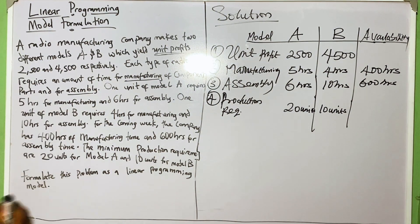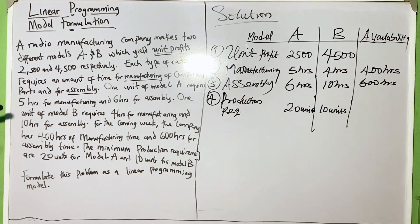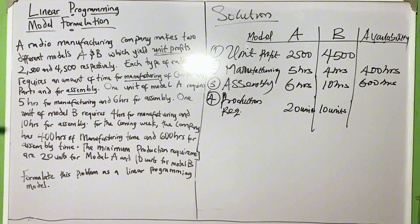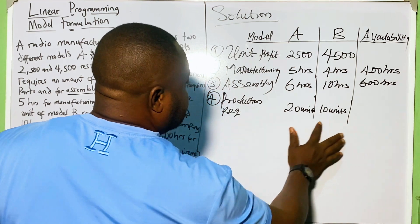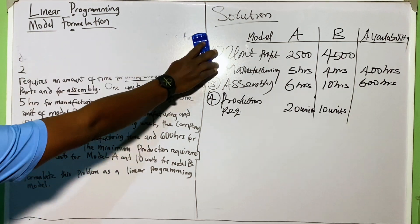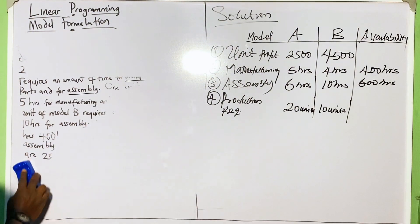Okay, we have now been able to itemize everything that will be on the model and that will be used to build the model proper. The next thing is to build the model proper and clearly show the three distinct parts of a linear programming problem.